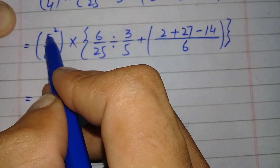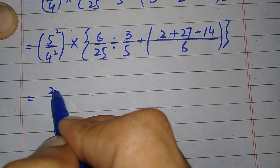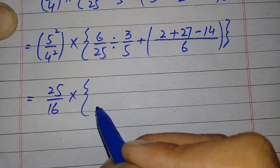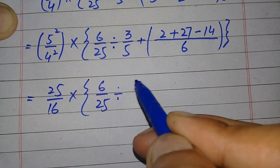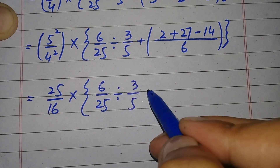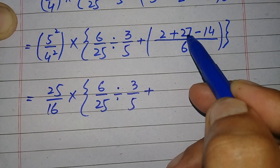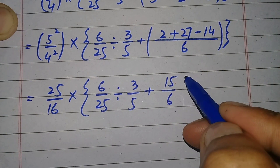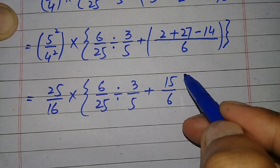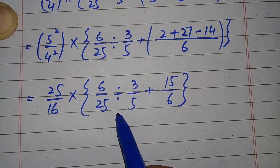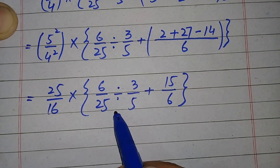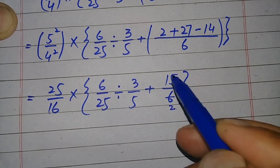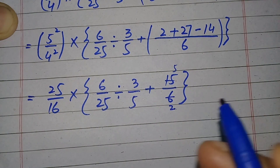5 to the power 2 means multiplying 5 twice, so 5 times 5 is 25. Similarly 4 times 4 is 16. Then multiply, braces open, 6 by 25 divide 3 by 5, plus — 2 plus 27 gives 29, 29 minus 14 gives 15, so 15 divided by 6. The parenthesis are eliminated and only braces are left. There are two operations inside the braces: division and addition. According to BODMAS, we first do the division. This fraction can be simplified by 3: 3 times 2 is 6 and 3 times 5 is 15, so it remains 5 by 2.